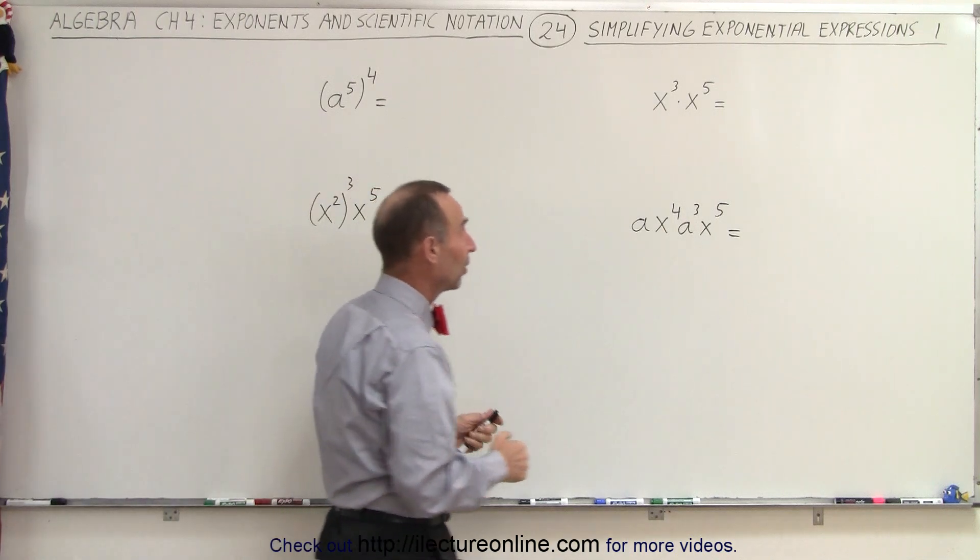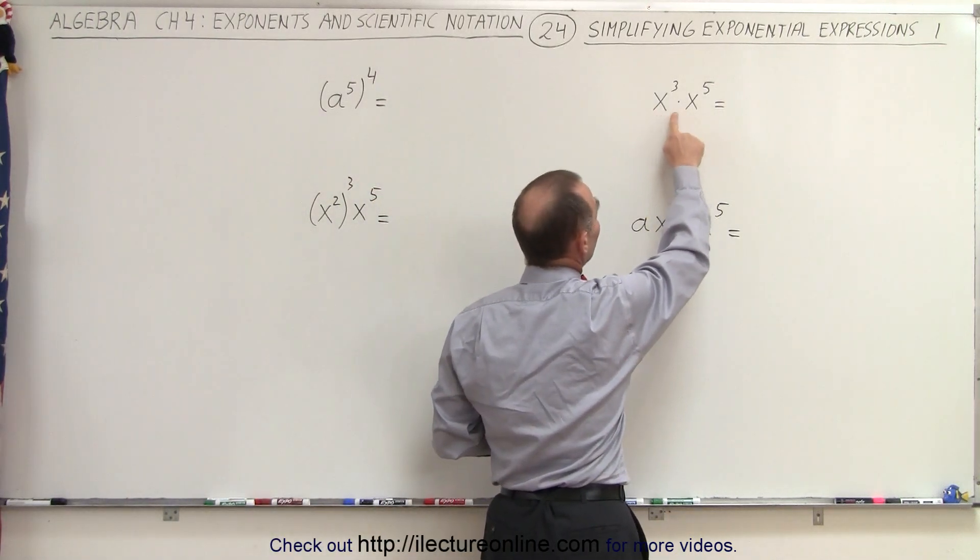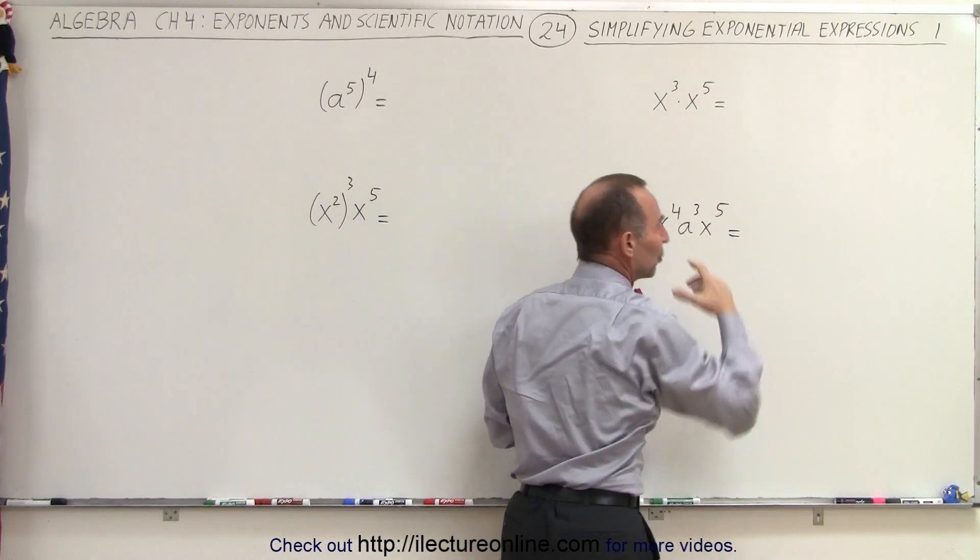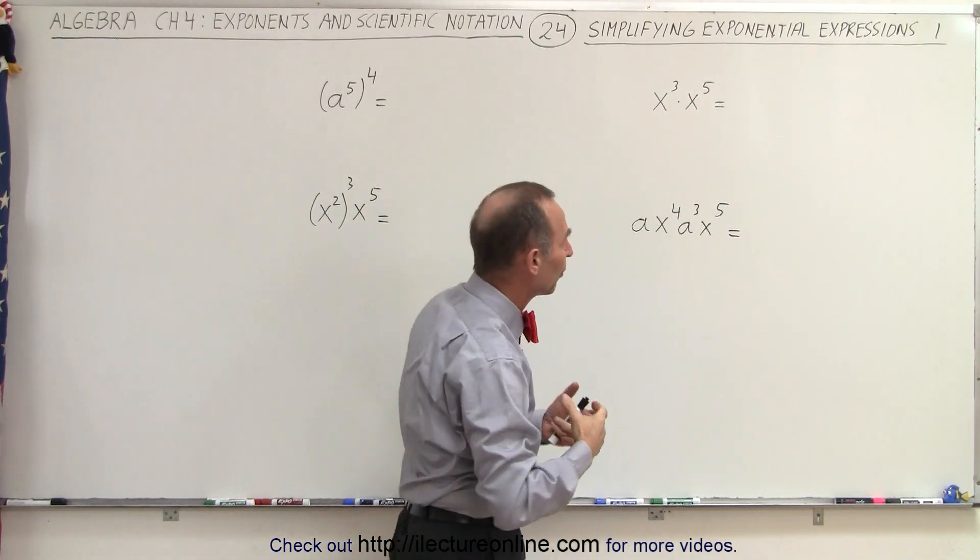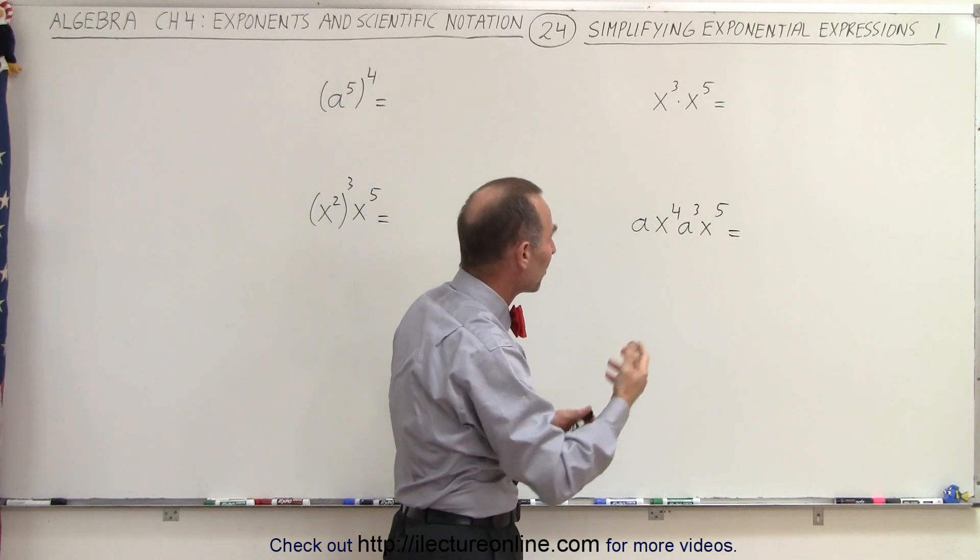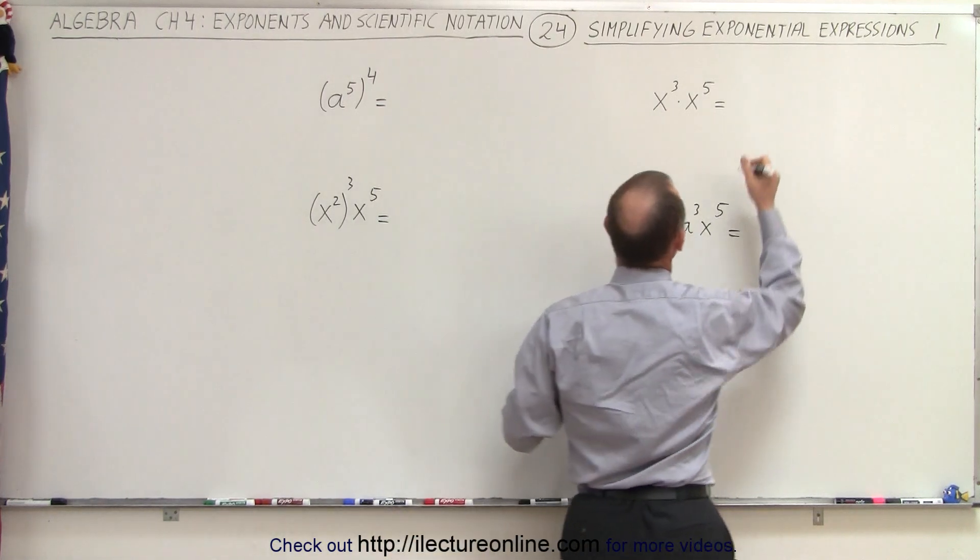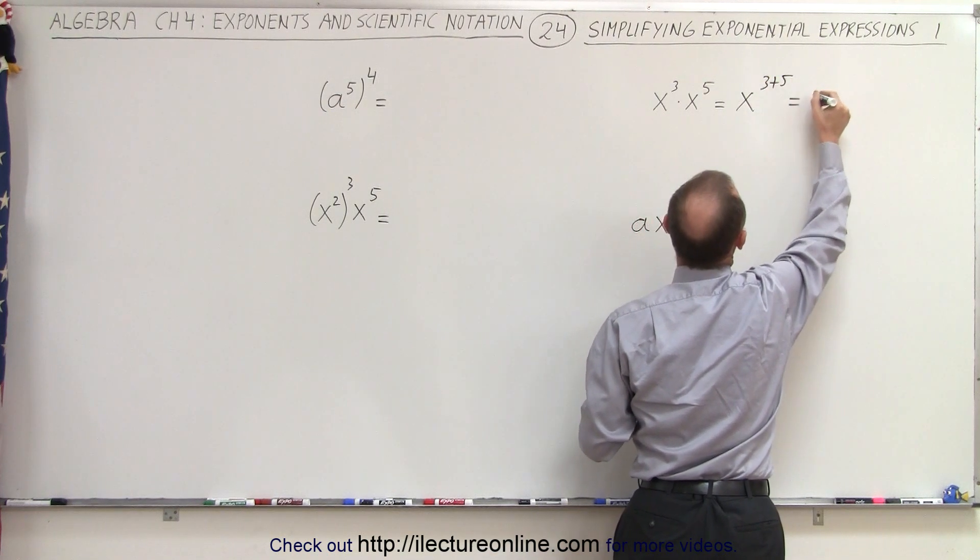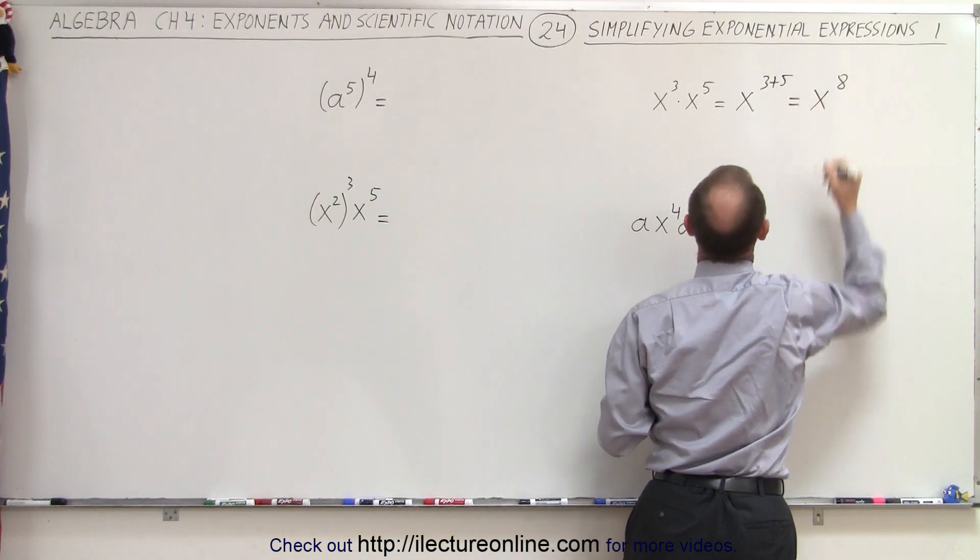For example, if we're dealing with this example here, notice the bases are the same, and if the bases are the same, we add exponents. So you kind of remember or repeat that to yourself so you remember what rule to use. So in this case, this is x to the 3 plus 5 power, which is x to the 8th power.